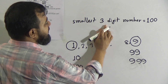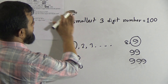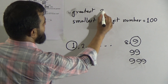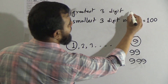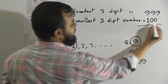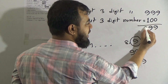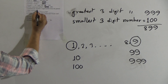The smallest 3-digit number is 100 and the greatest 3-digit number is 999. Now subtract: 999 minus 100. Subtract 0 from 9 gives 9; subtract 0 from 9 gives 9; subtract 1 from 9 gives 8. So 899 is our answer — if we subtract the smallest 3-digit number from the greatest 3-digit number, we get 899.